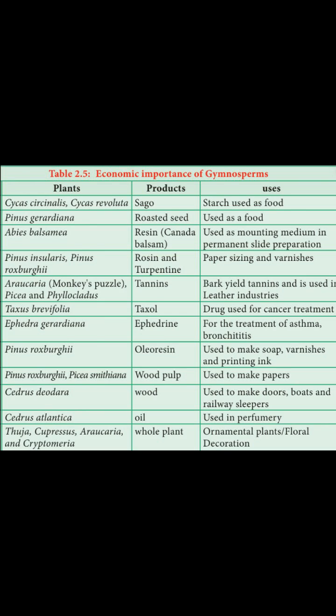From Pinus roxburghii, resin is extracted to produce rosin and turpentine. These are used in paper sizing and varnishes. Varnish gives a shining finish to wood, doors, and windows, and is used in painting. Paper sizing uses extracts from the plant.